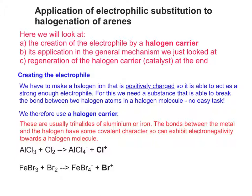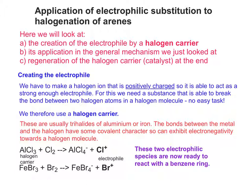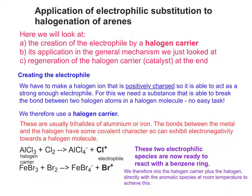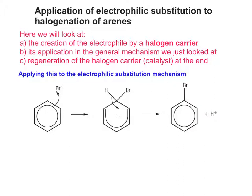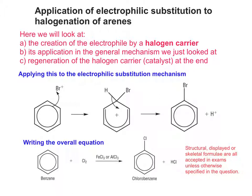Once you've made your electrophiles, they're ready to react with a benzene ring. To do this, you mix the halogen carrier directly with the aromatic species at room temperature — not forgetting that the halogen also has to be present, so AlCl3 plus Cl2, for example. If we apply this to the general mechanism, Br+ behaves as an electrophile because it's positively charged and strong enough to attract a pair of electrons out of the delocalised pi system. If asked to write the overall equation, you can use structural, displayed, or skeletal formulae provided you're clear. You'd put the identity of the halogen carrier above the arrow, because it's behaving as a catalyst — it's regenerated.